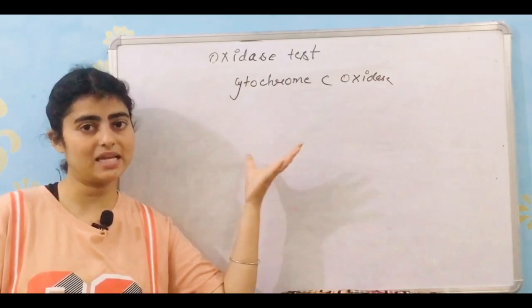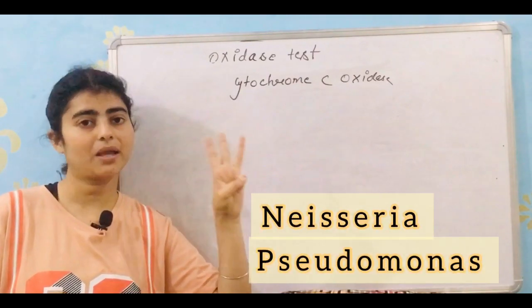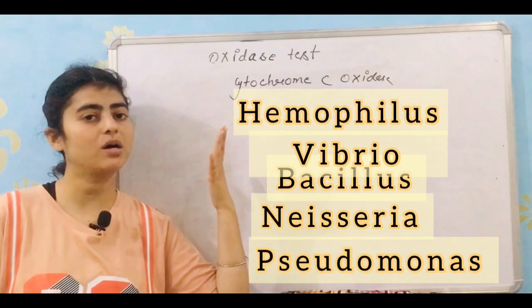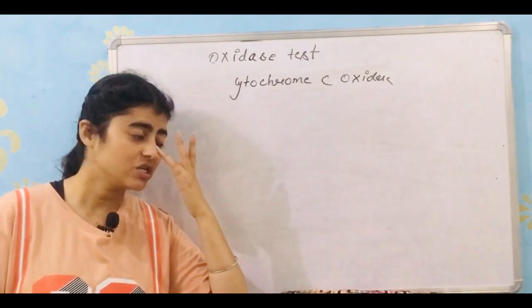So the bacteria that produce these enzymes are Pseudomonas, Neisseria, Bacillus, Vibrio, and Haemophilus. These bacteria give positive results because they produce oxidase.